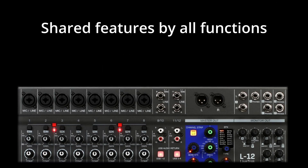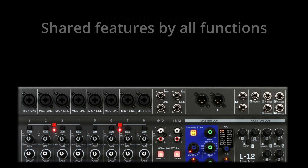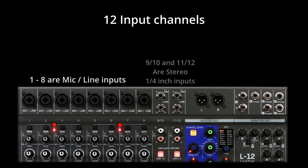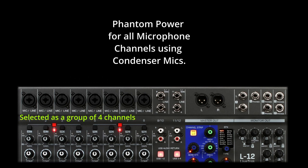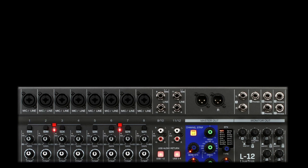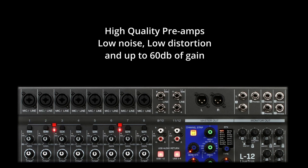Let's look at all the features shared by the three main functions. The board has 12 input channels — eight mic/line and two additional stereo inputs for a total of 12 discrete channels. Phantom power for all eight mic inputs can be selected four inputs at a time. The first two channels have a high-Z button for high-impedance instruments, and the next six have a -20 dB pad button to compensate for loud audio sources.